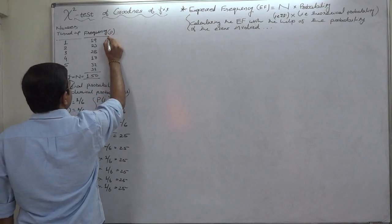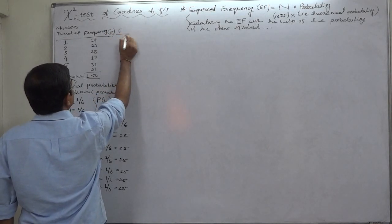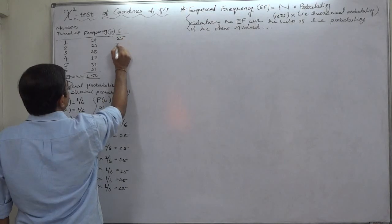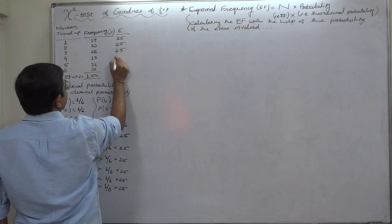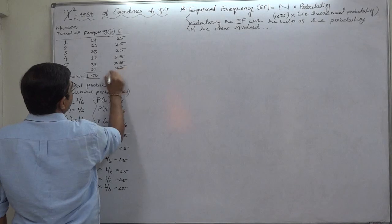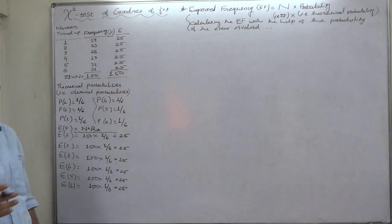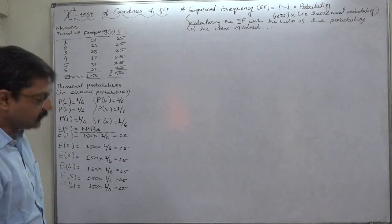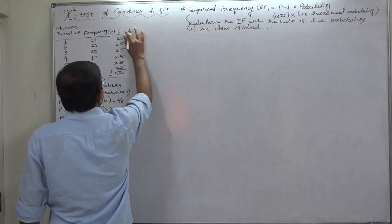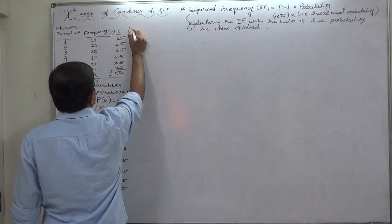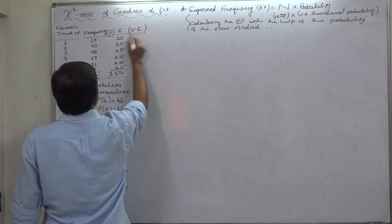Actual or observed frequency then expected frequency, and they are 25 for all the 6 possible cases if the die is believed to be unbiased. This case is more or less like the case of uniform distribution, but without using the term uniform distribution also we can go ahead.